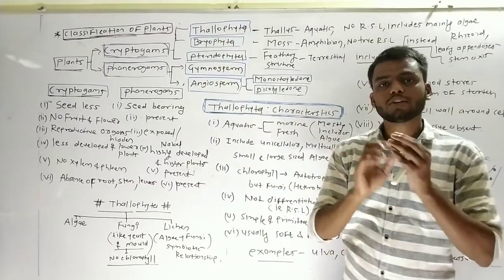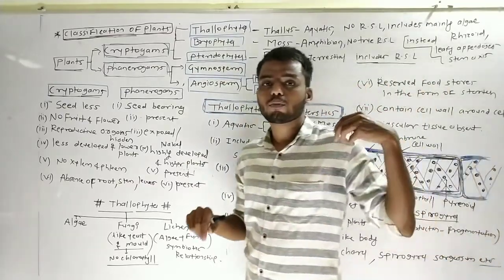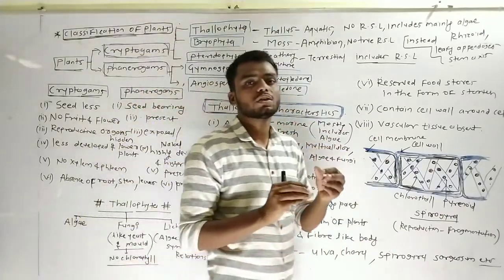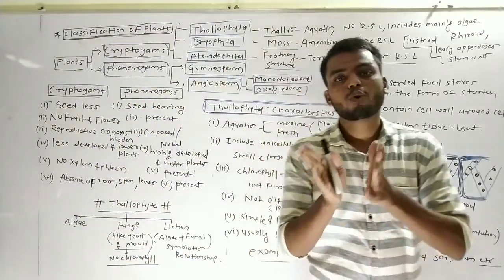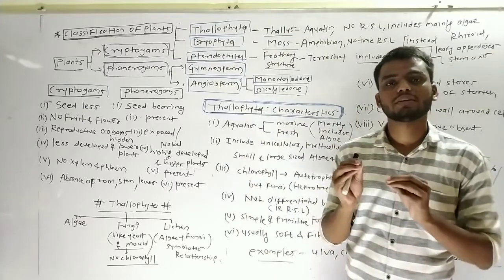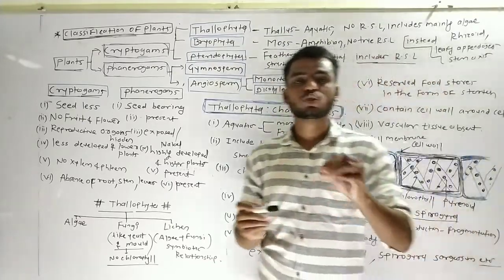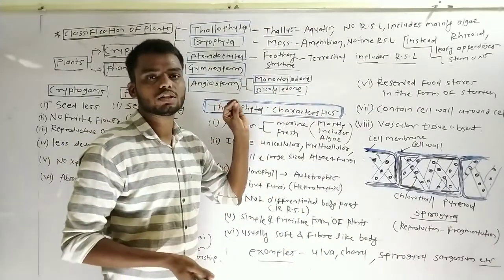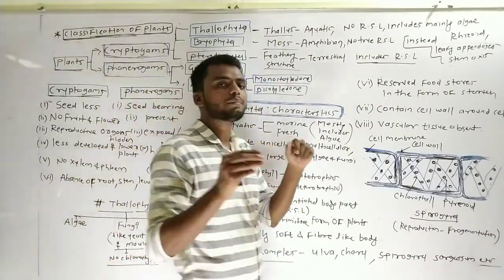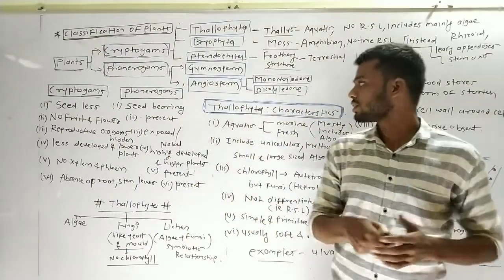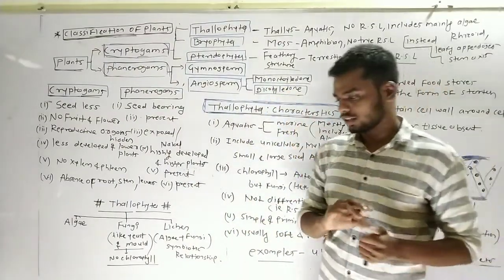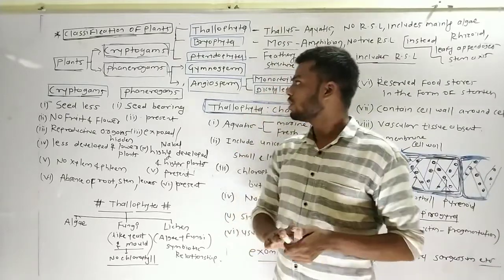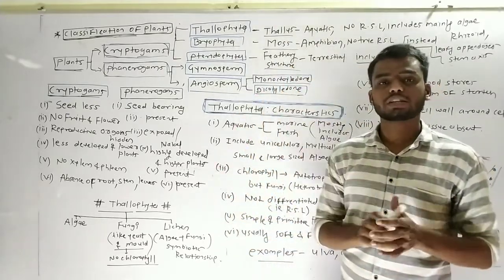Angiosperm is again divided into two groups: Monocotyledon and Dicotyledon, depending on the number of cotyledons present in the seed. If the number of cotyledons is one, it is referred to as Monocotyledon. If the number of cotyledons is two, it is Dicotyledon. All of this was discussed in the previous introductory lecture.